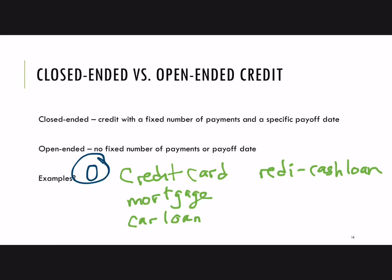What about a mortgage? This is an example of closed-ended credit. There are a fixed number of payments and a specific payoff date. Common mortgage terms would be 15 years or 30 years, which tells you a specific number of months that it needs to be paid, and you would have a date in mind when it would be paid off. Car loans are the same thing — there's usually a fixed number of payments and a fixed payoff date, so that would be a closed-ended example.